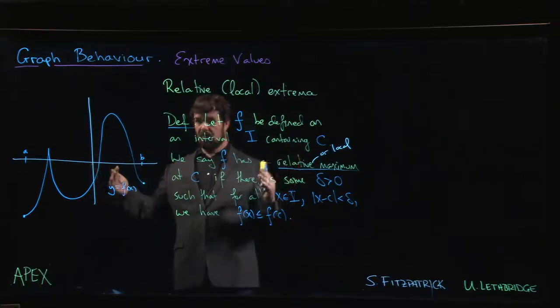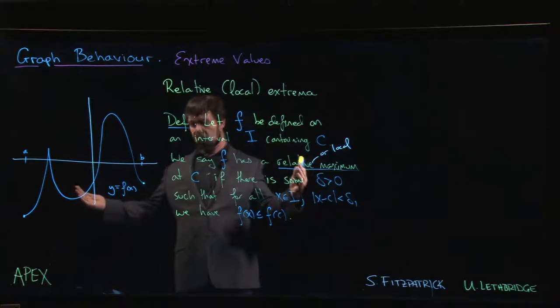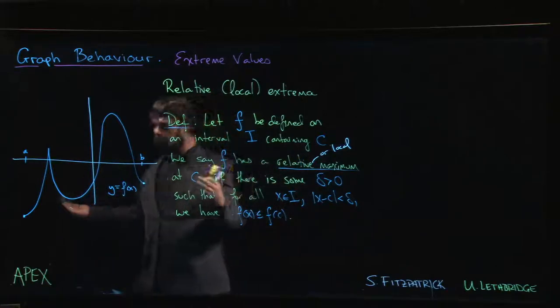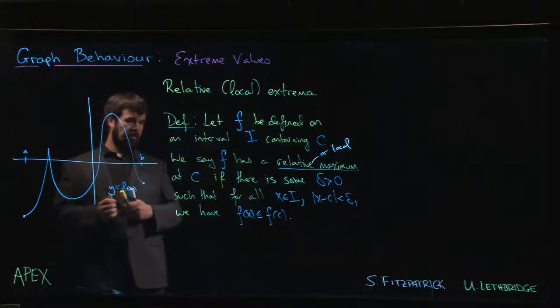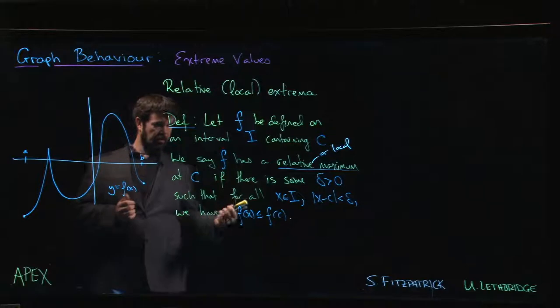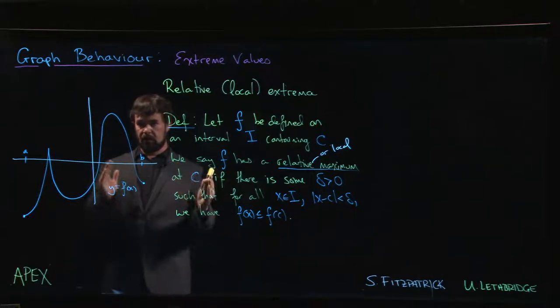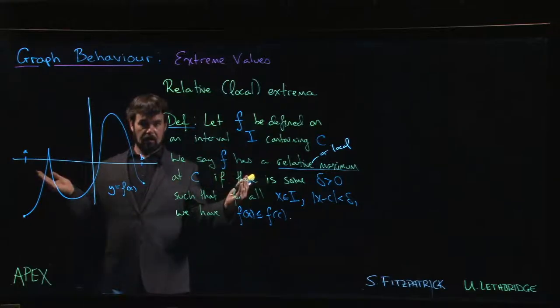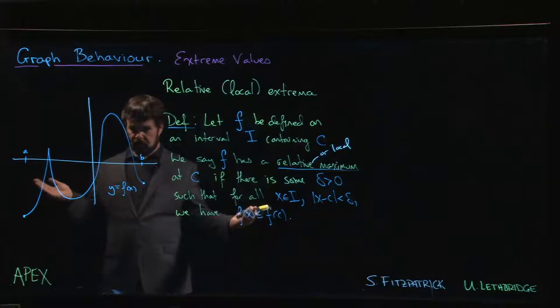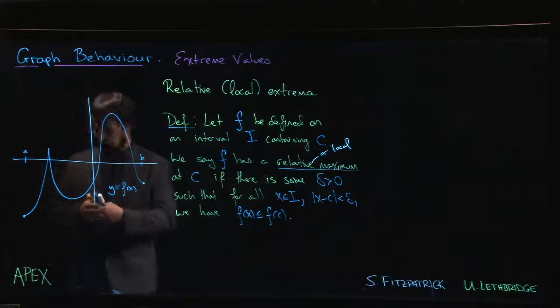We don't want to look at the entire domain and say this is the biggest y value on the entire domain. We just want to look at some portion of it. That's why we introduce this Delta. If we can find this Delta so that if we move a little bit, a distance of Delta either side of this point c, then f of c is the biggest y value that we find on that interval.